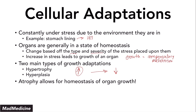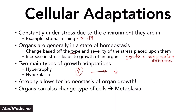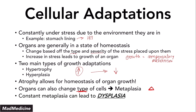That's with the assumption that the stress being placed upon the organ is gone. But what happens when the stress doesn't go away? Our organs can also change the type of cells they have by going through a mechanism called metaplasia. In metaplasia, you are changing the type of cell — this is a change in the basic structure or type of cells in that organ. The reason why metaplasia is dangerous is because with constant metaplasia, you can get dysplasia.